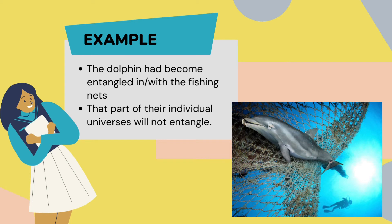The examples are: 'The dolphin had become entangled with the fishing net.' You can also see in the illustration that a dolphin had been entangled in a net. And: 'That part of the individual universe will not entangle.'